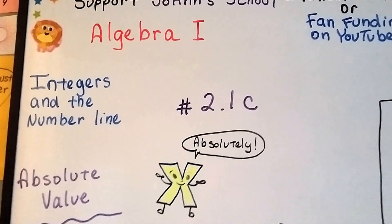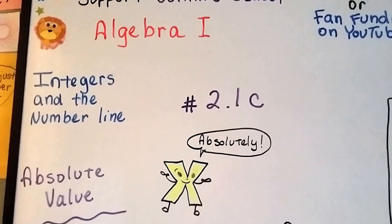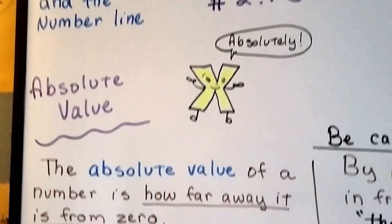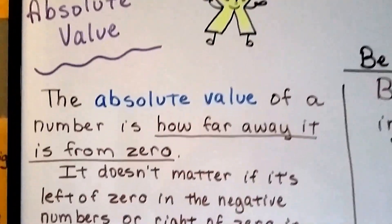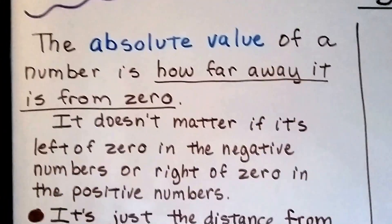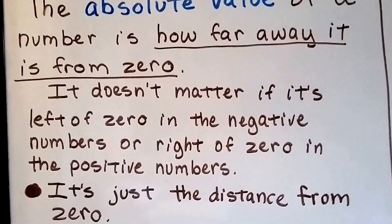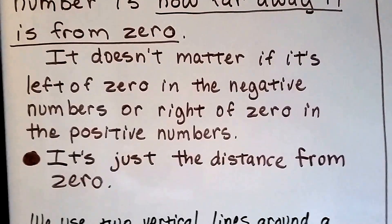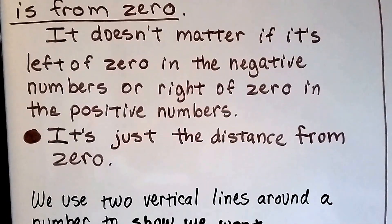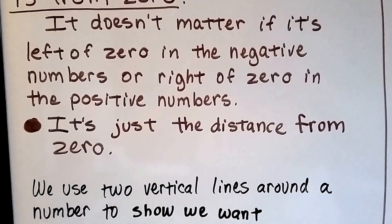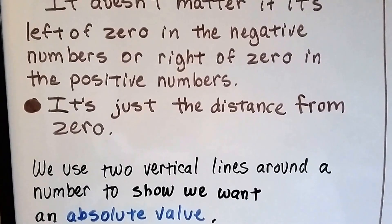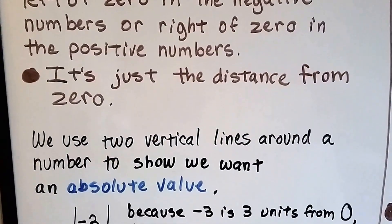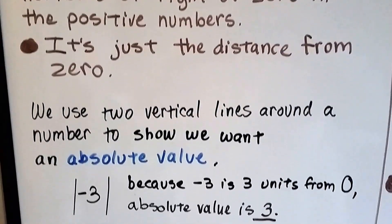Algebra 1, number 2.1c. We're going to talk about absolute value. The absolute value of a number is just how far away it is from zero. It doesn't matter if it's left of zero in the negative numbers or right of zero in the positive numbers — it's just the distance from zero.